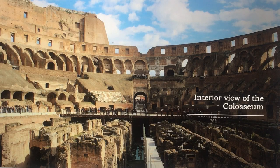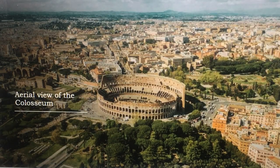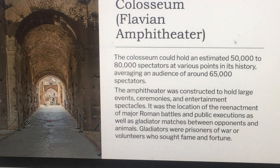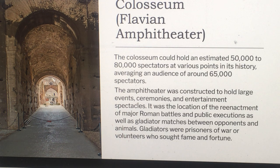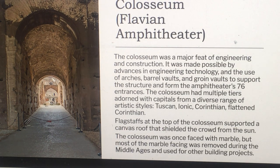Here's an interior view of the Colosseum as it currently is — this area was underneath the floor. It could hold an estimated 50,000 to 80,000 spectators at various points in its history, averaging around 65,000. The amphitheater was constructed to hold large events, ceremonies, and entertainment spectacles. It was the location of reenactments of major Roman battles, public executions, and gladiator matches between opponents and animals. Gladiators were prisoners of war or volunteers who sought fame and fortune. The Colosseum was made possible by advances in engineering technology including the use of arches, barrel vaults, and groin vaults to support the structure and form the amphitheater's 76 entrances.